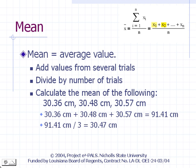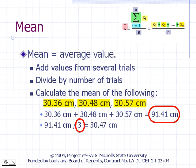The mean or average x̄ is equal to the summation of x_i from i = 1 to n, divided by n, where n is the number of trials. For example, suppose measurements of the depth of a cup gave values of 30.36, 30.48, and 30.57 centimeters. Adding these values gives 91.41 centimeters. Dividing by the number of trials, 3, we get 30.47 centimeters as the mean depth.